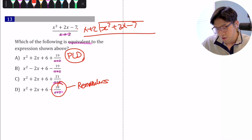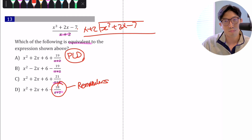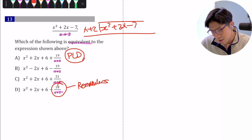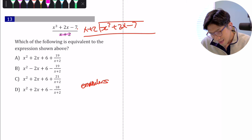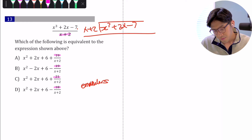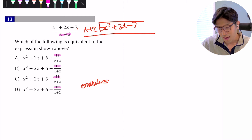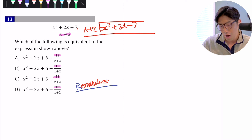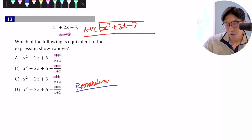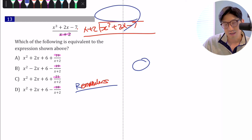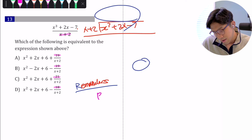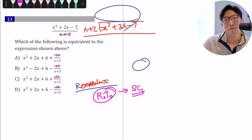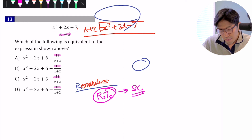There are two ways to go about these questions. First is just good old polynomial long division — do your math, get your answer, and pick the choice. A second, more efficient way: if all the answer choices have different remainders — positive 19, negative 19, positive 21, negative 18 — then we don't even need to do full long division. As long as we know exactly what the remainder is, we can quickly identify the correct answer. The shortcut is called the remainder theorem.